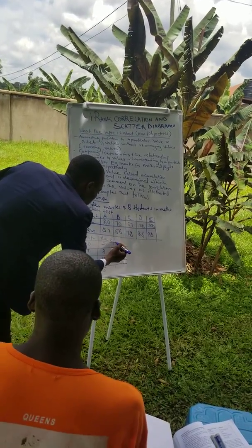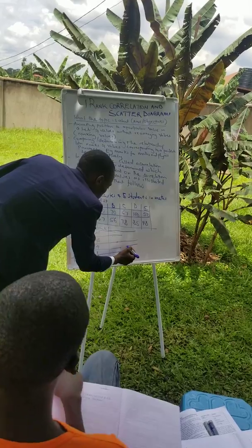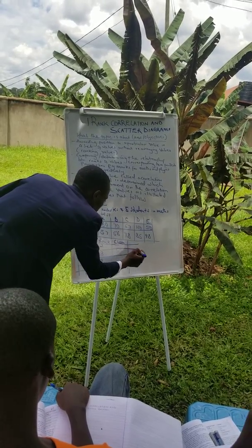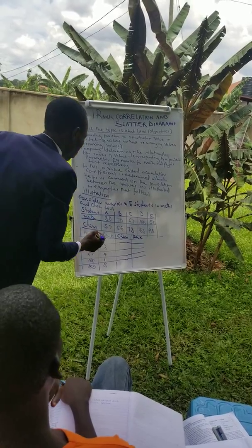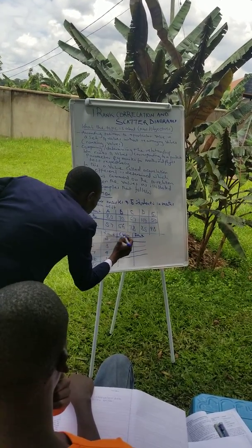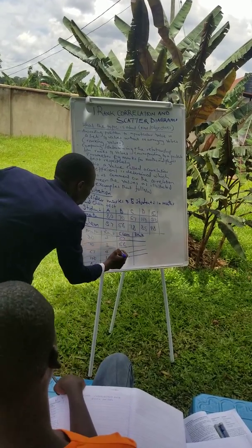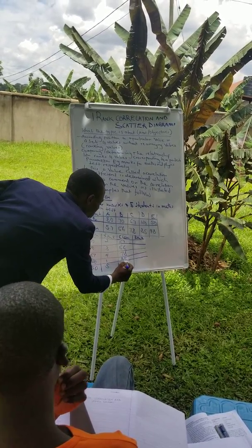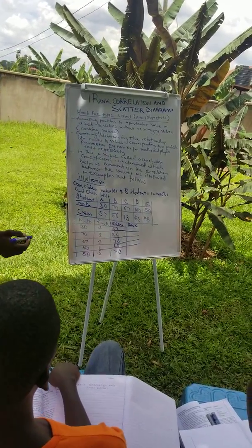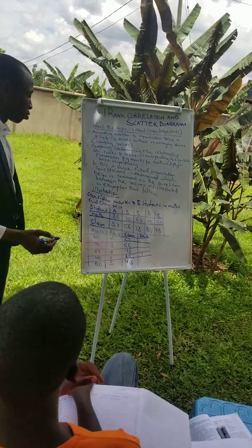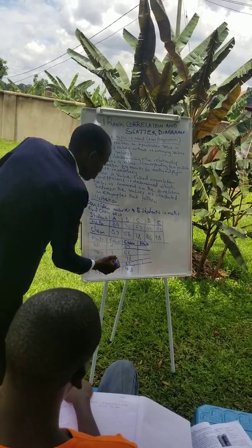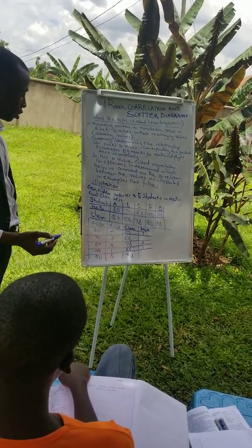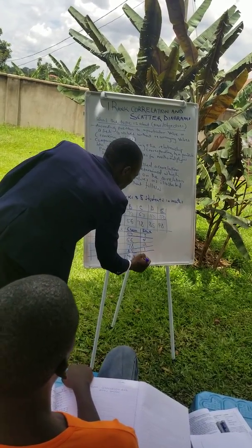Then we also rank chemistry. In chemistry, this person has 57, this one has 56, this one has 78, this one has 85, and lastly this one has 48. So in chemistry, when you rank: 85 is number 1, 78 becomes number 2, 57 becomes number 3, 56 becomes number 4, and this one becomes number 5.